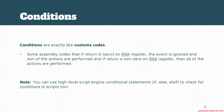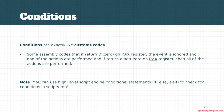We also have conditions, and conditions are exactly like custom codes — they are assembly code. If at last you put zero in the RAX register, then the debugger assumes that the event should be ignored and the other actions should not be executed. So it's a level before the actions: if the conditions are not met, the actions will never get a chance to execute. But if you return anything other than zero in RAX register, then the actions are performed.